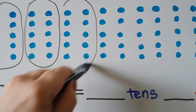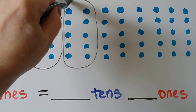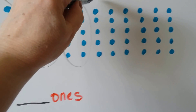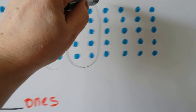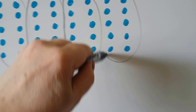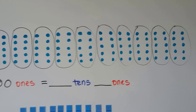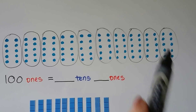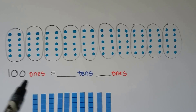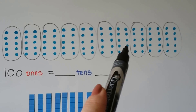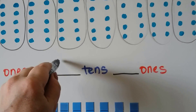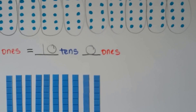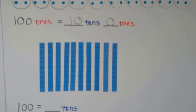That's two, three, four, five, six, seven, eight, nine, and ten. We made ten tens: ten, twenty, thirty, forty, fifty, sixty, seventy, eighty, ninety, one hundred. One hundred ones is equal to one, two, three, four, five, six, seven, eight, nine, ten tens. And we don't have any ones outside of the group, so there's zero ones. One hundred ones is equal to ten tens and zero ones.